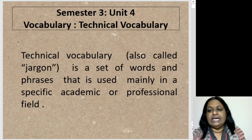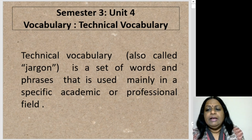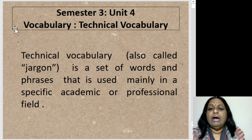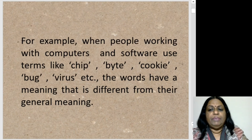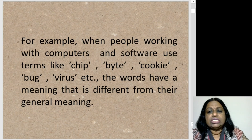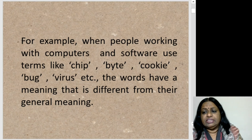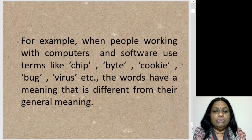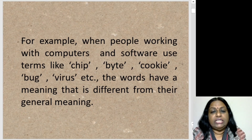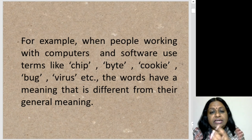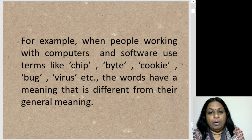Let's look at technical vocabulary — it's also called jargon. It's a set of words or phrases used in a specific academic context or in the professional field. For example, when people are working with computers and software, they use terms like chip, byte, cookie, bug, virus. These words have a different meaning from their general everyday meaning. This is called technical vocabulary — these words have a different meaning in the context of the computer profession.